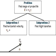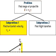Our first subproblem is to find the ball's horizontal velocity. We know its initial speed and angle above the horizontal. We can use basic trigonometry to break the initial velocity into horizontal and vertical parts.